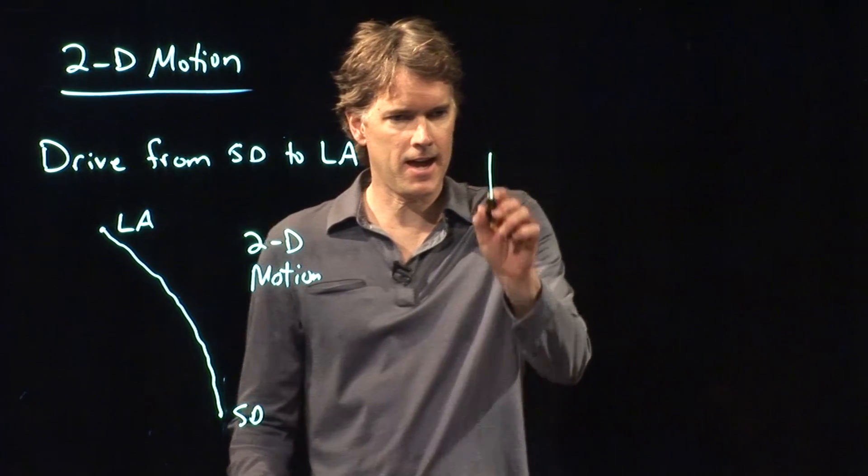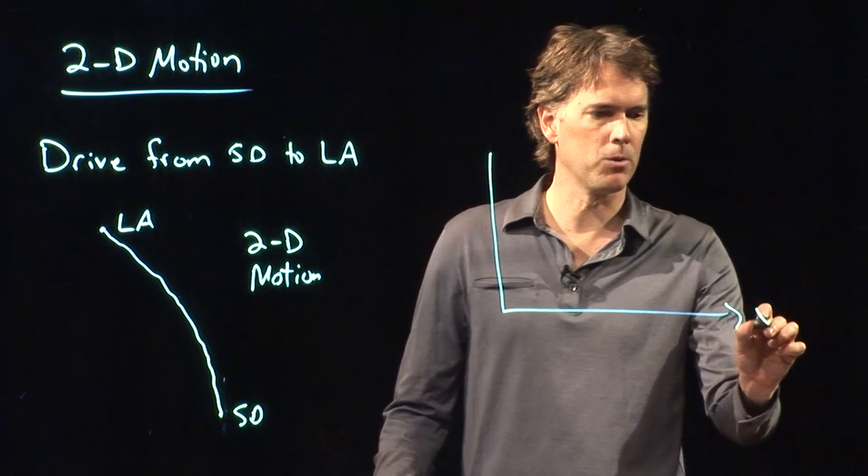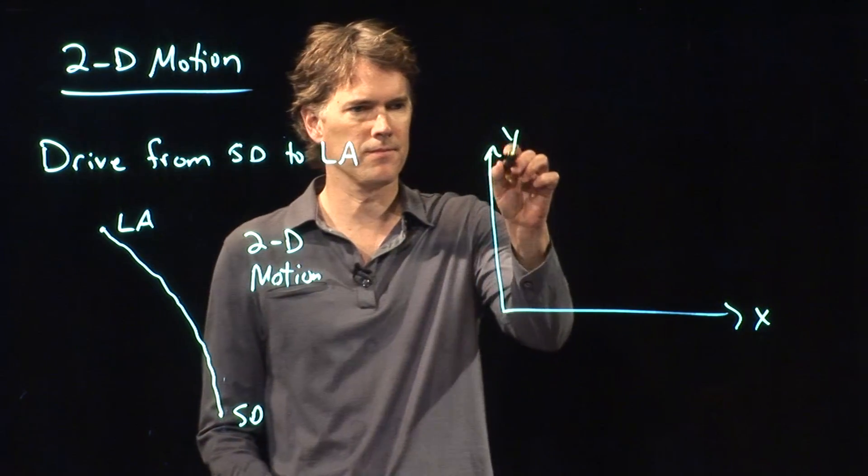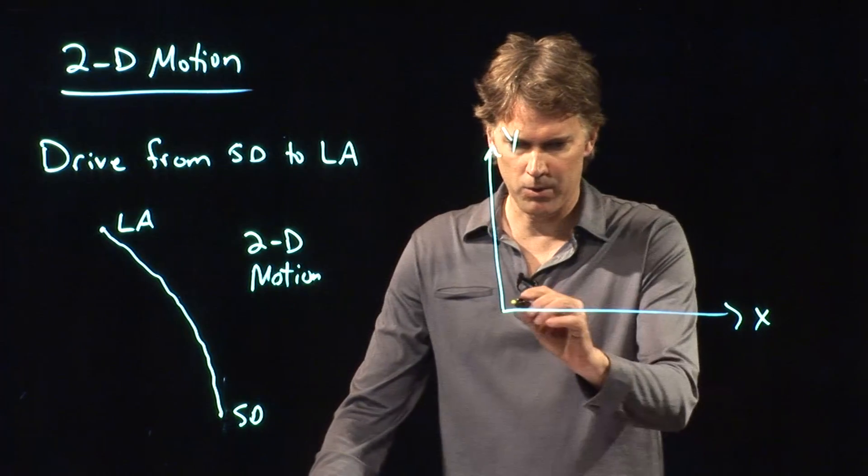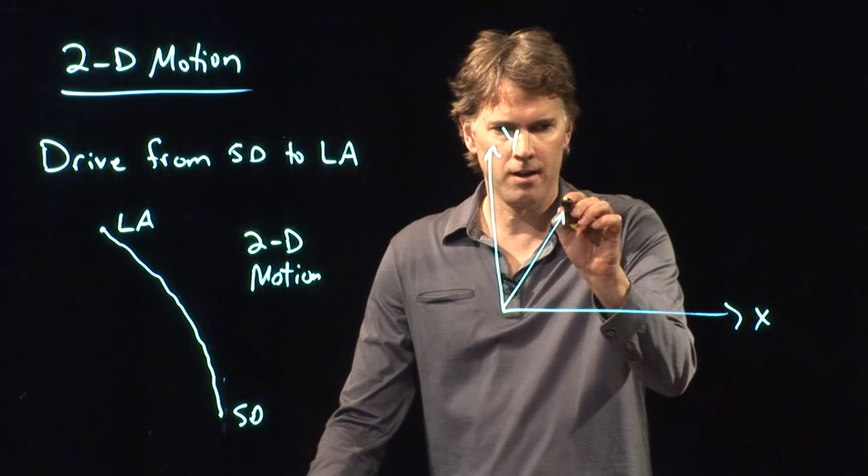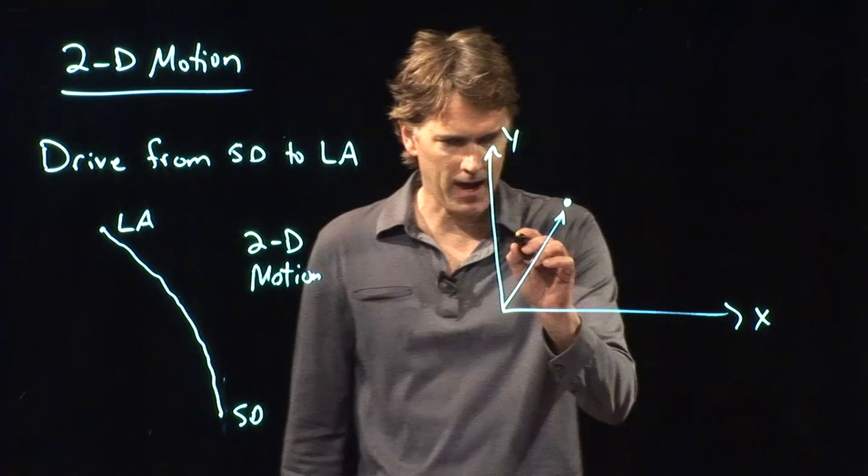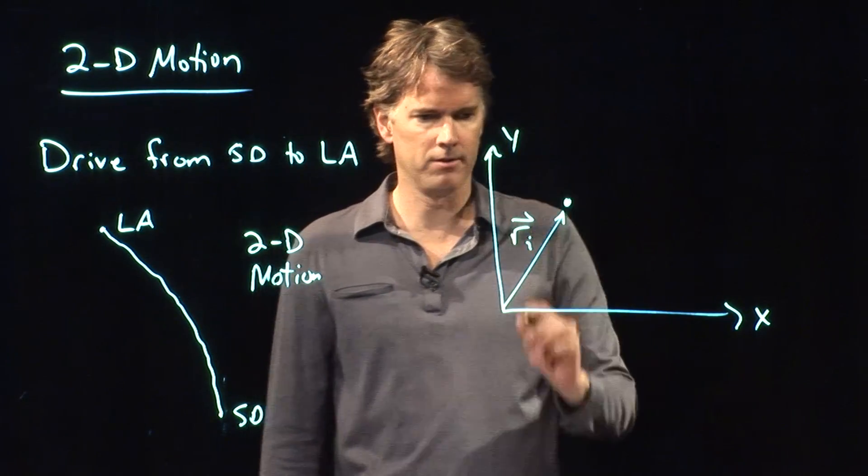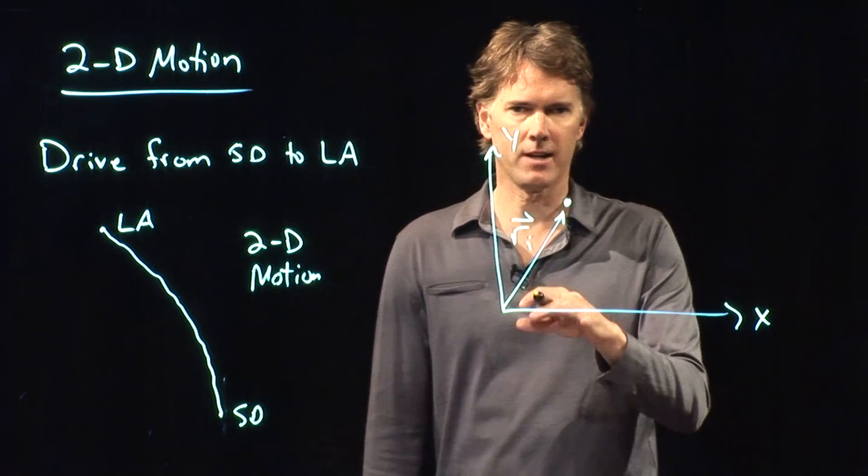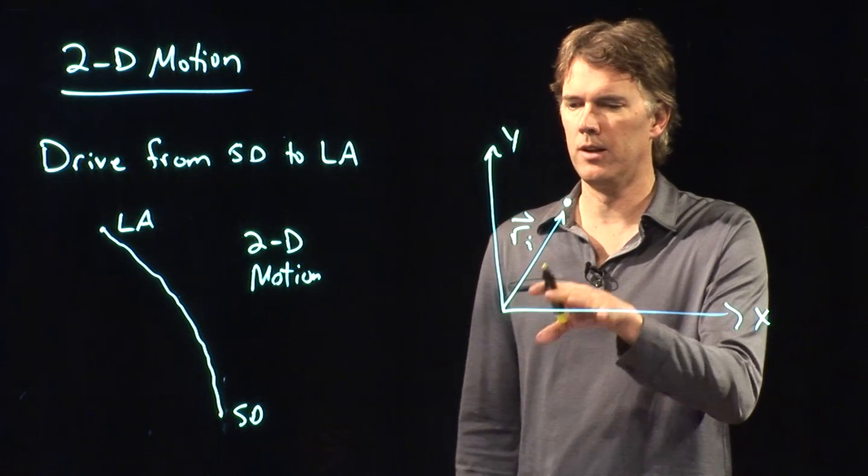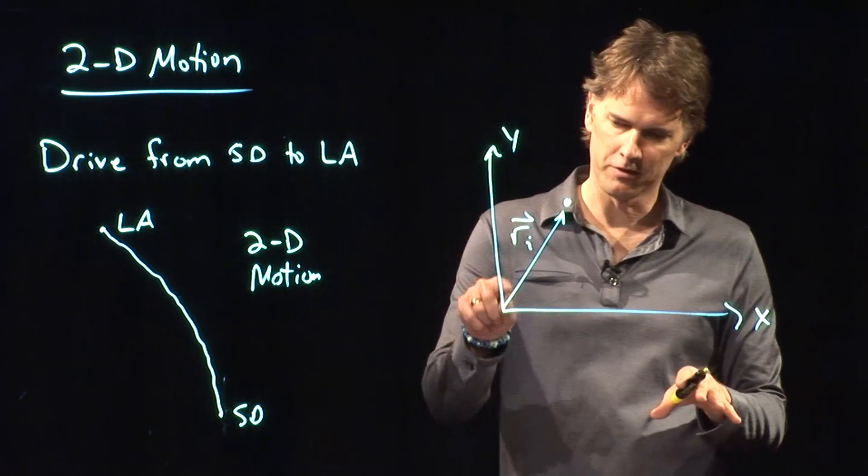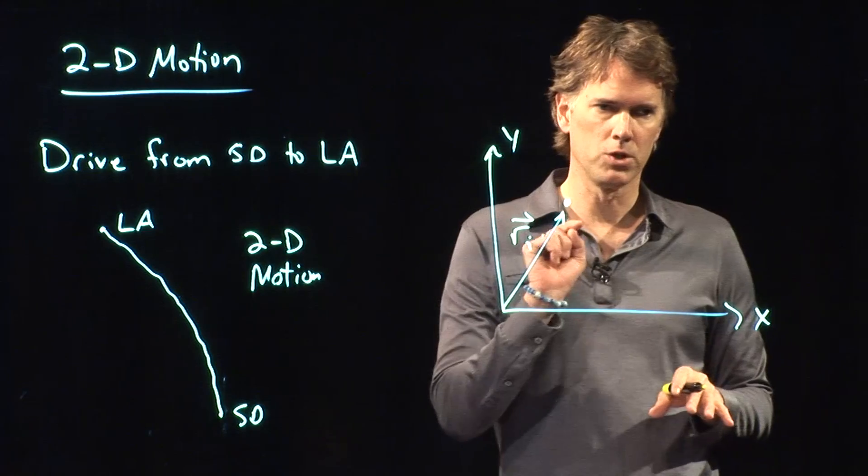All right, so let's review a little bit. Let's say I have an XY coordinate system. If I have an XY coordinate system and I start at that point right there, I can label that with a vector, right? That is my position vector for the starting position. Position vectors always start at the origin and go to the point of interest.